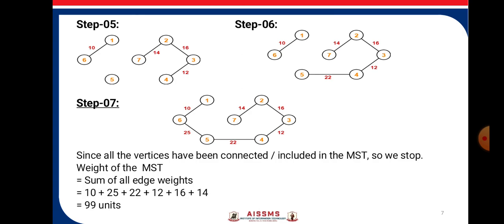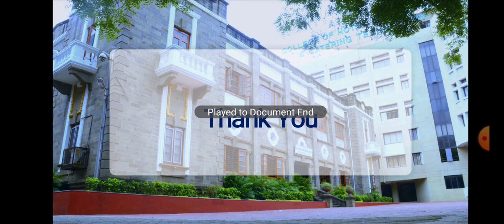The sum of all the edge weights is 10 plus 25 plus 22 plus 12 plus 16 plus 14, that is 99 units. In this way, we have studied the Kruskal's algorithm to find out the minimum spanning tree. Thank you.